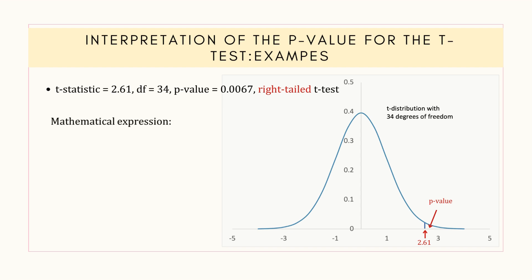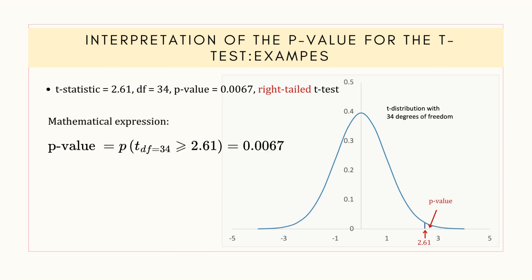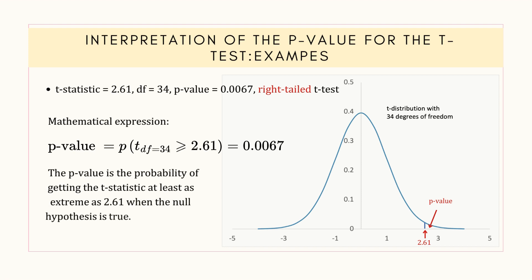Now, in this case, the p-value is the probability of getting the t-statistic at least as extreme as 2.61 when the null hypothesis is true.